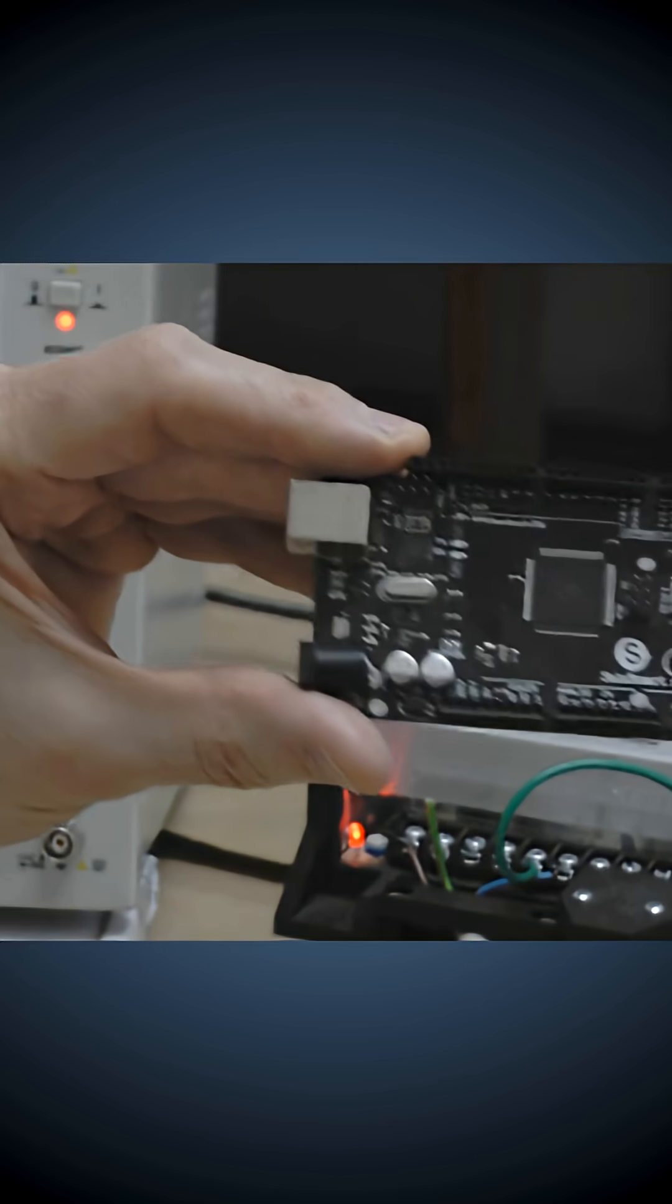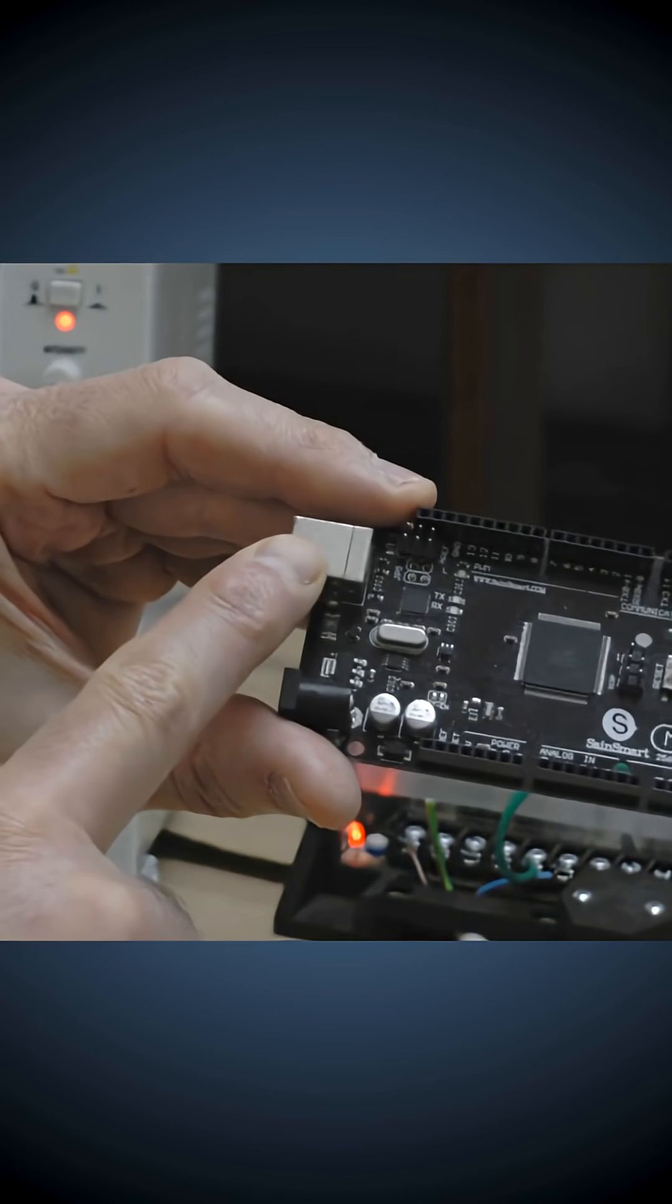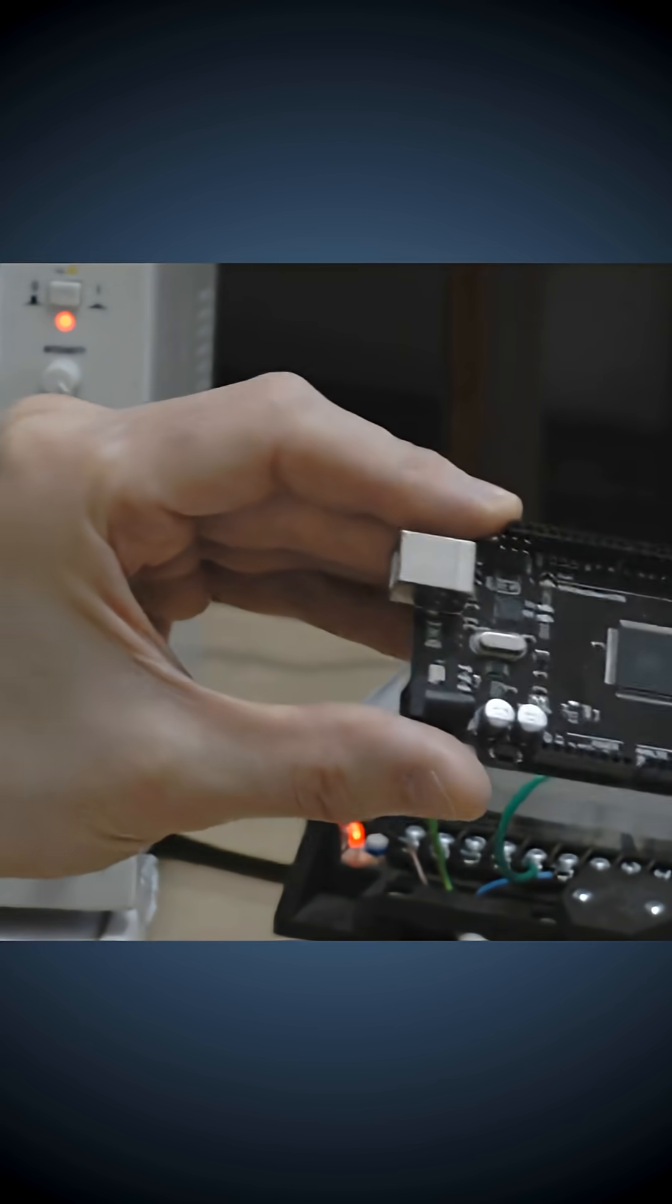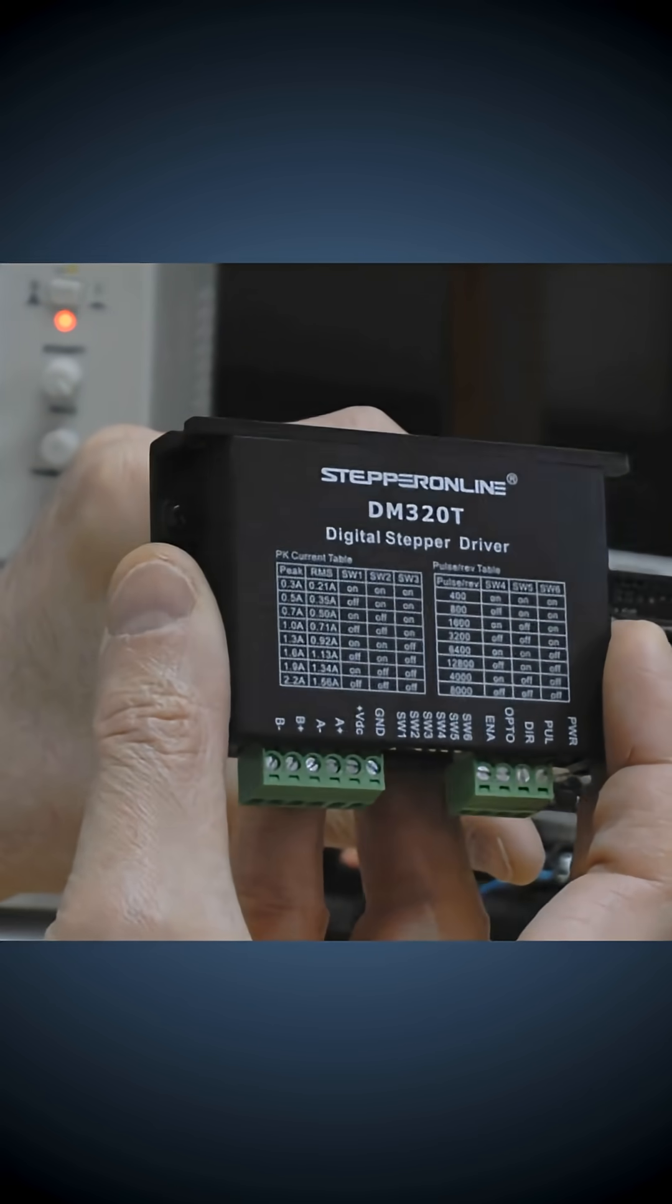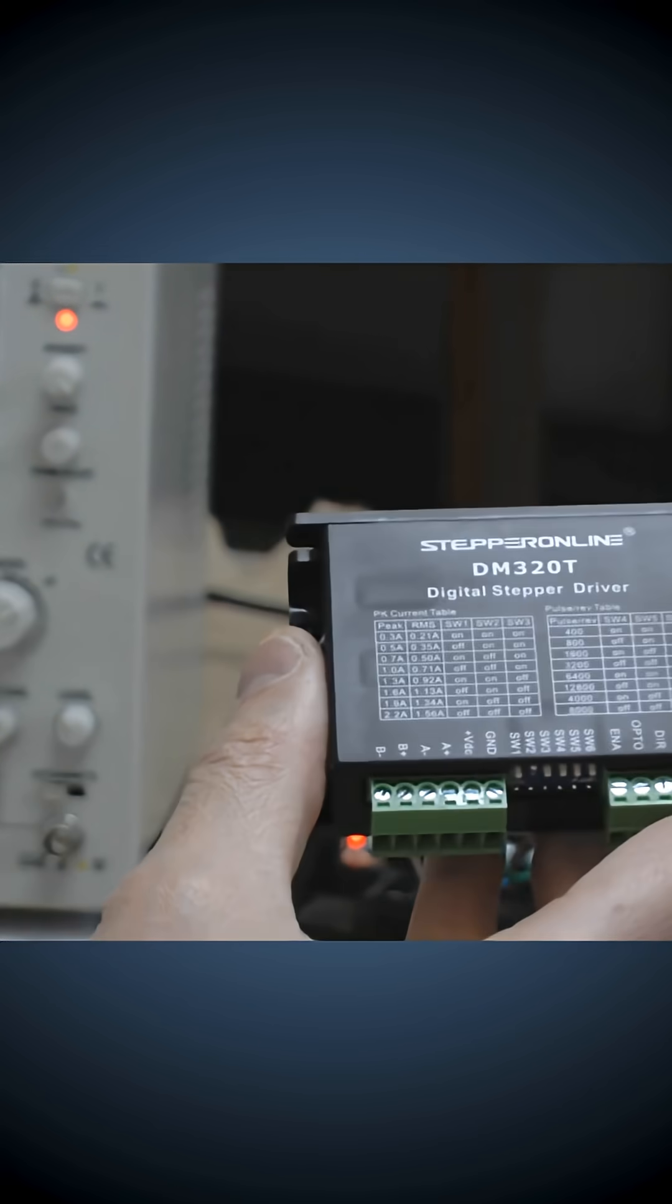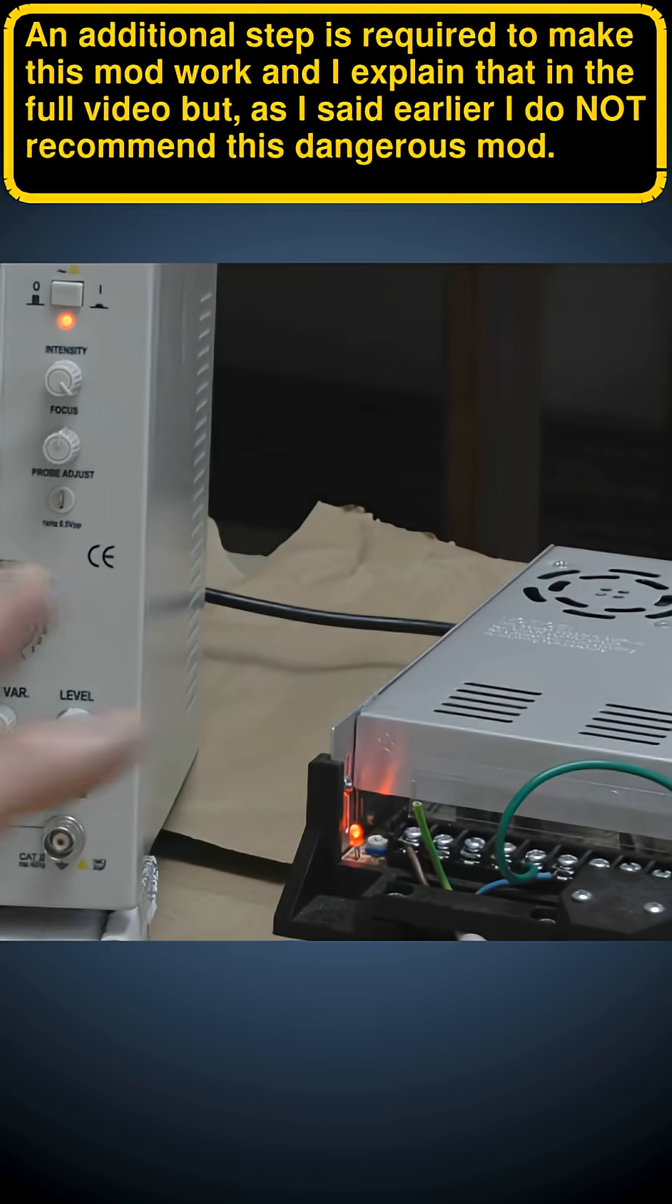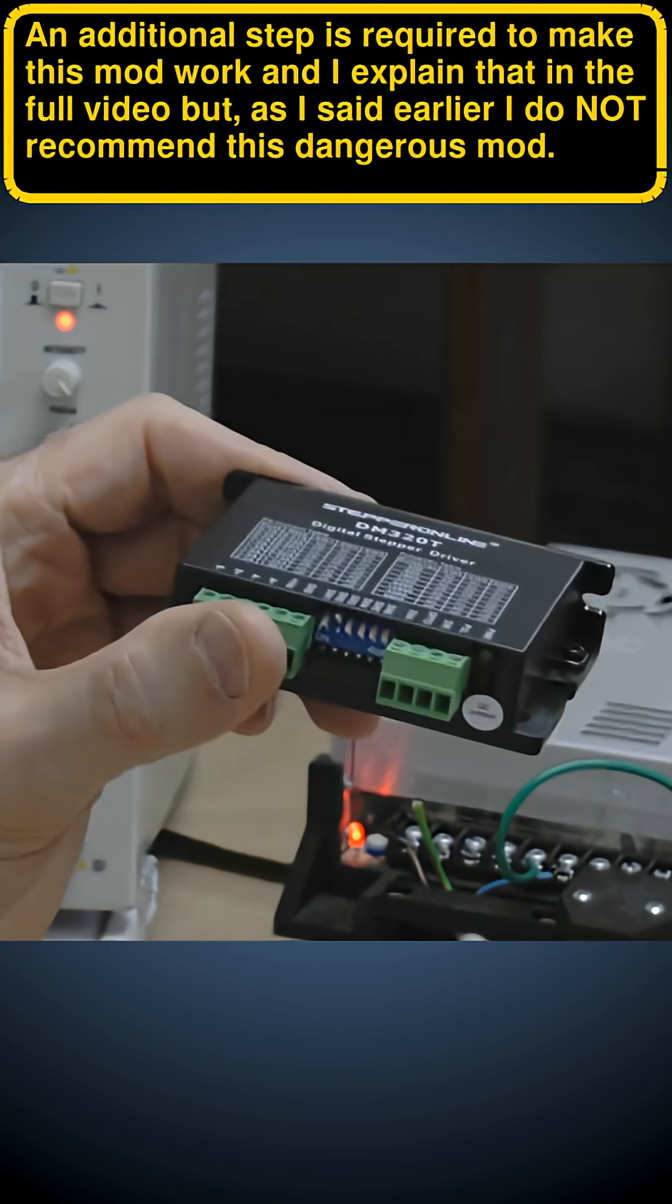But the problem with that is you have to have the same ground reference voltage on the Arduino that you have natively in this driver. When I took my multimeter out and started looking at voltages, I realized that's not the case. I was able to programmatically control these drivers doing that mod, but it worked.